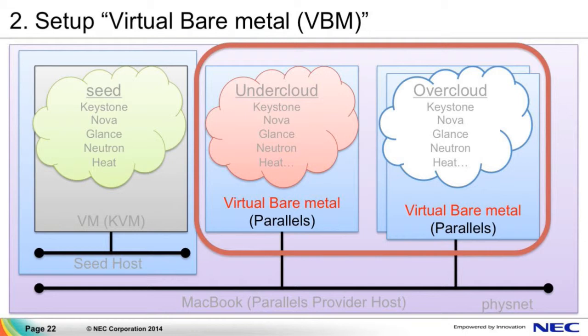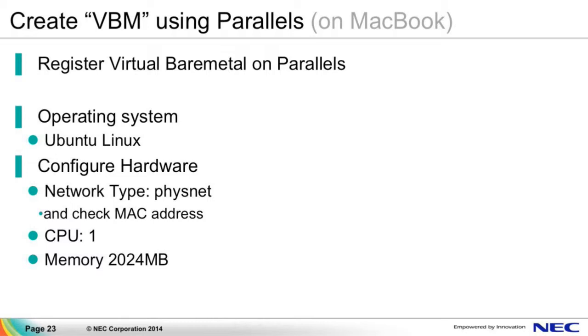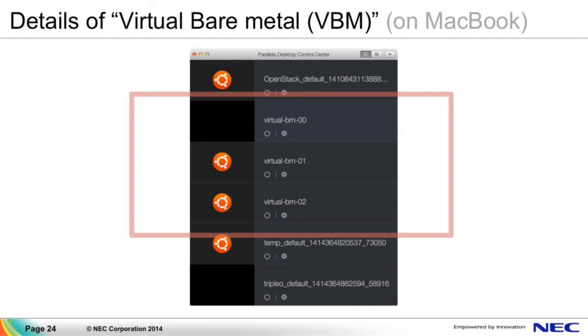Second, set up virtual bare-metal. Virtual bare-metal is provided by Parallels Desktop, so I must do two things: one is to create virtual machines using Parallels, and the other is to register the virtual machines into Triple O as virtual bare-metal. The creation process uses the Parallels GUI — start up Parallels Desktop application and add three virtual machines with the specification described here. As a result, three virtual machines are registered and visible in the GUI.